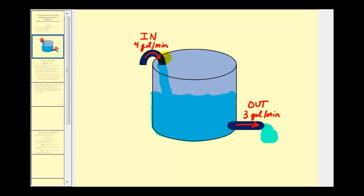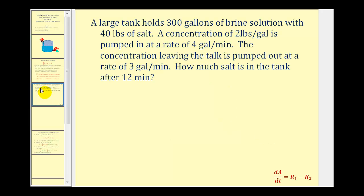And because they're different, notice how the inflow rate is going to be higher than the outflow rate, so the amount of liquid in the tank is going to be increasing. We will have to consider this when setting this up. For our example, a large tank holds 300 gallons of brine solution with 40 pounds of salt. A concentration of two pounds per gallon is pumped in at a rate of four gallons per minute. The concentration leaving the tank is pumped out at a rate of three gallons per minute. How much salt is in the tank after 12 minutes?